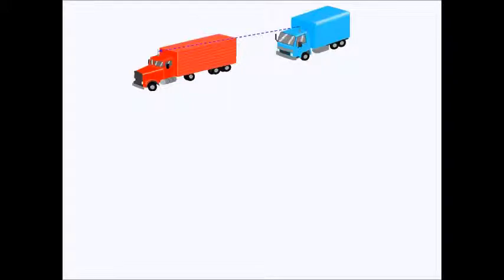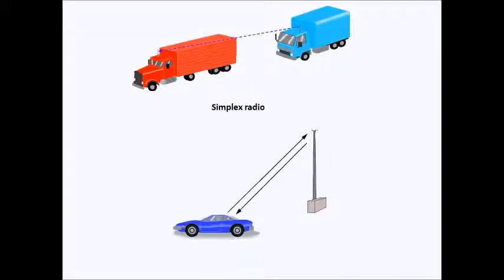As you can see in this picture, two vehicles use the same frequency but only one party can talk at a time, like in a walkie-talkie. This type of communication is called simplex radio. In this picture, two transmitters use different frequencies so both parties can talk at the same time. This type of communication is called duplex radio. Cell phones are duplex. Always remember, a cell phone is a radio.